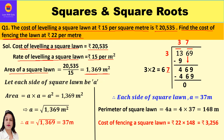Now we can find the length of each side of the square lawn. Let each side be 'a'. We know that area of a square is a × a = a², which equals 1369 square meters. Therefore each side a = √1369 meters. To find this we will use the long division method. The first step is to form pairs starting from the ones digit: the pairs are 69 and 13.